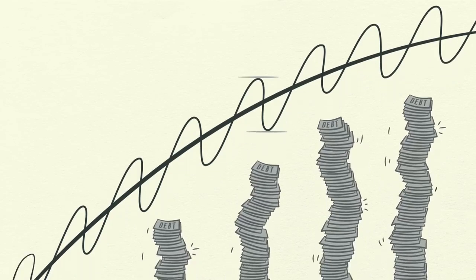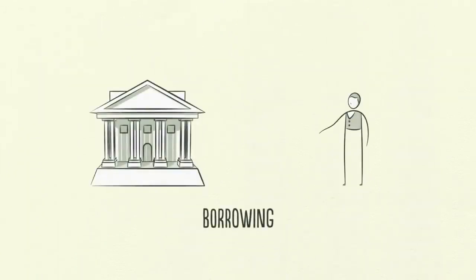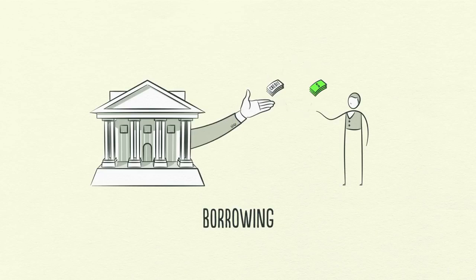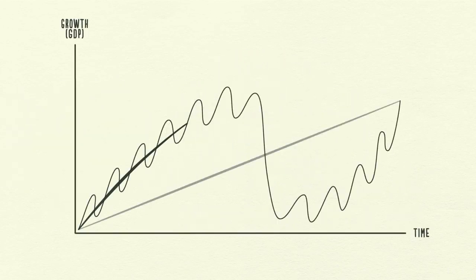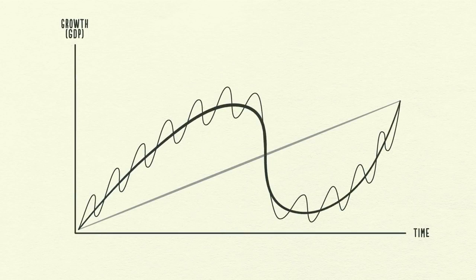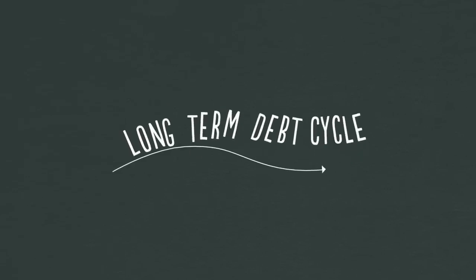Why? Because people push it. They have an inclination to borrow and spend more, instead of paying back debt. It's human nature. Because of this, over long periods of time, debts rise faster than incomes, creating the long-term debt cycle.